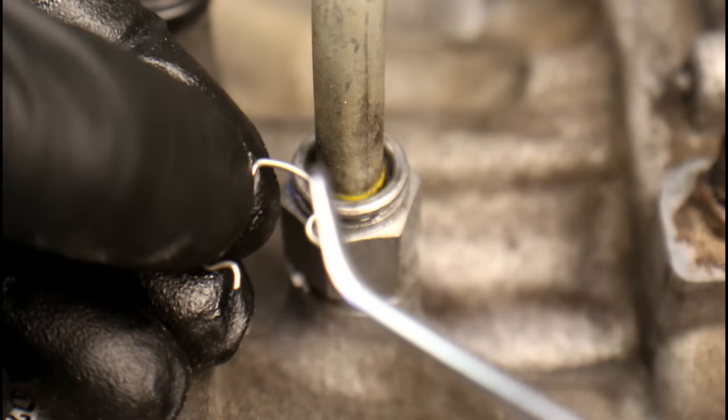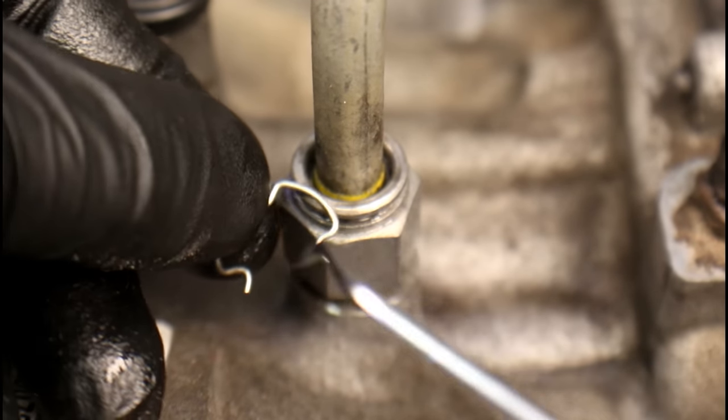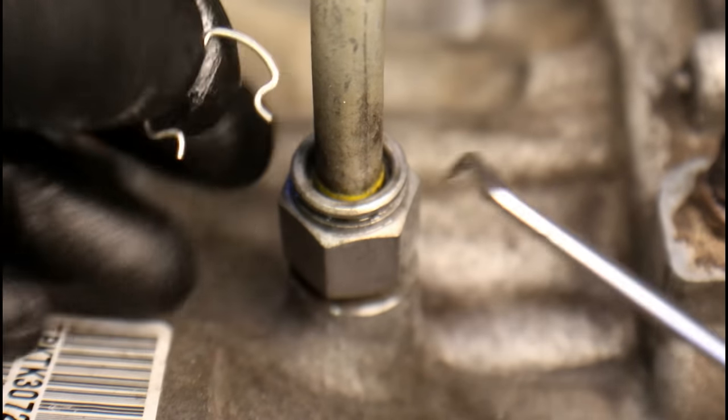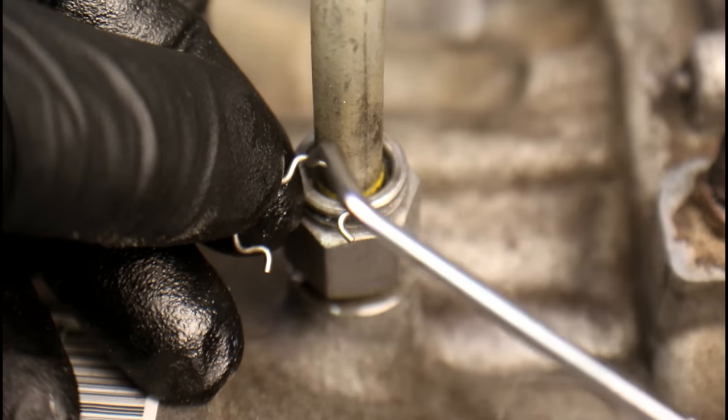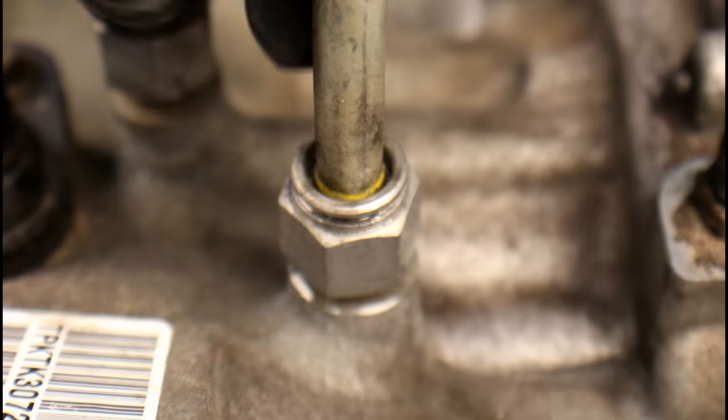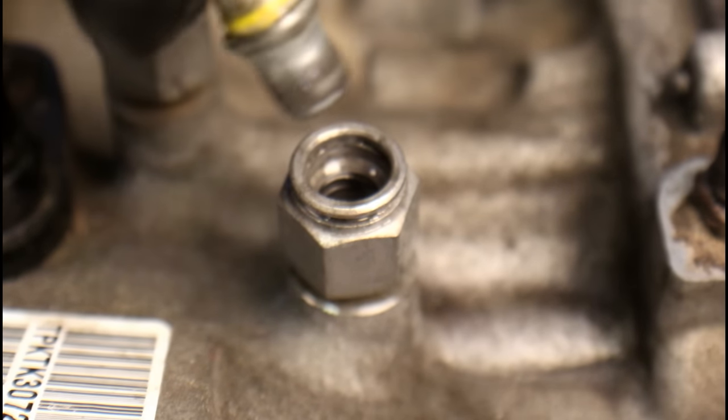One thing I like to do is if I'm replacing a transmission or a cooler that already has these quick connects on here, I'll save the old clips. That way if I've lost one while taking it apart, I've got a replacement. So now that we've got this off, now it's just a matter of grabbing the line and working it off.